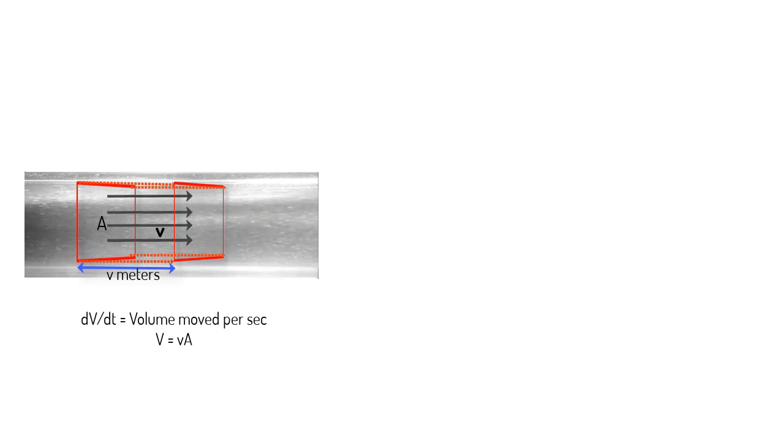Why we take vA on the right hand side is that in one second, all molecules of water in this section should have moved v meters to the right, thereby moving a volume equal to v meters by area A. So vA volume has effectively moved in one second, hence the volumetric flow rate is vA.